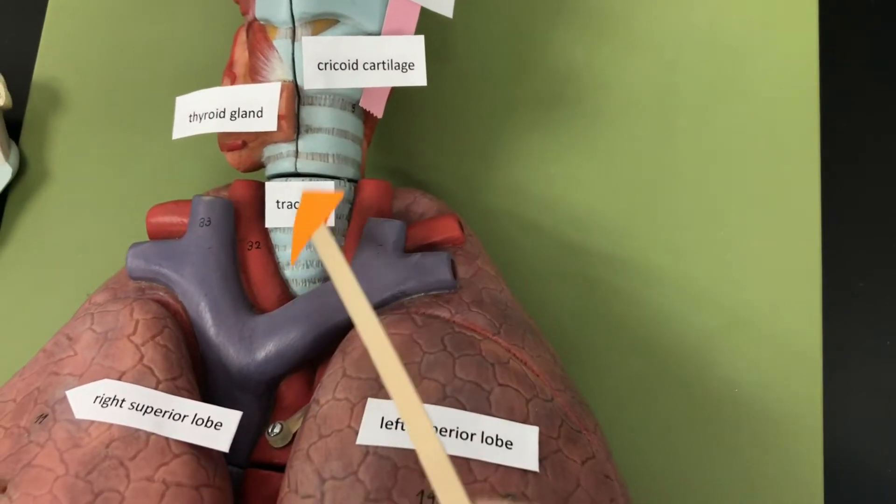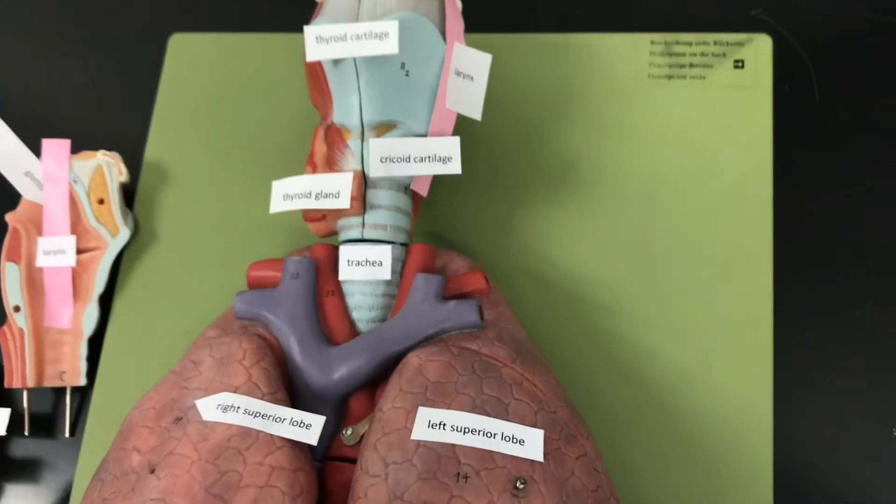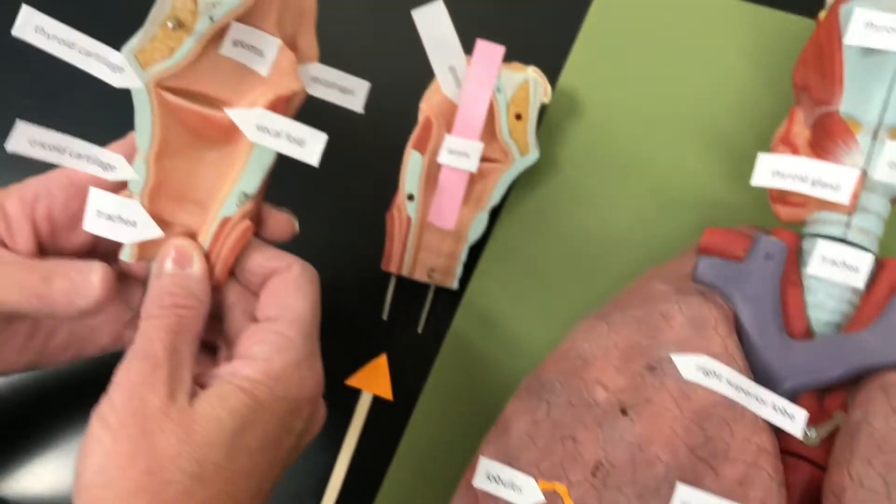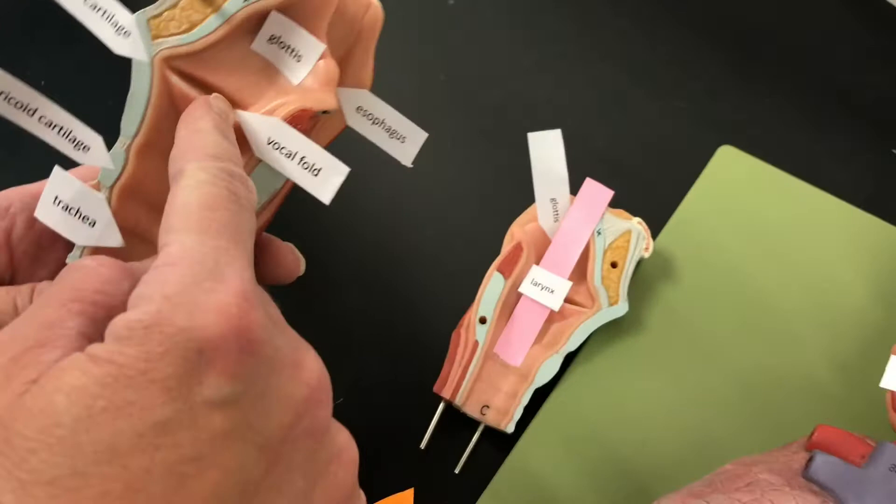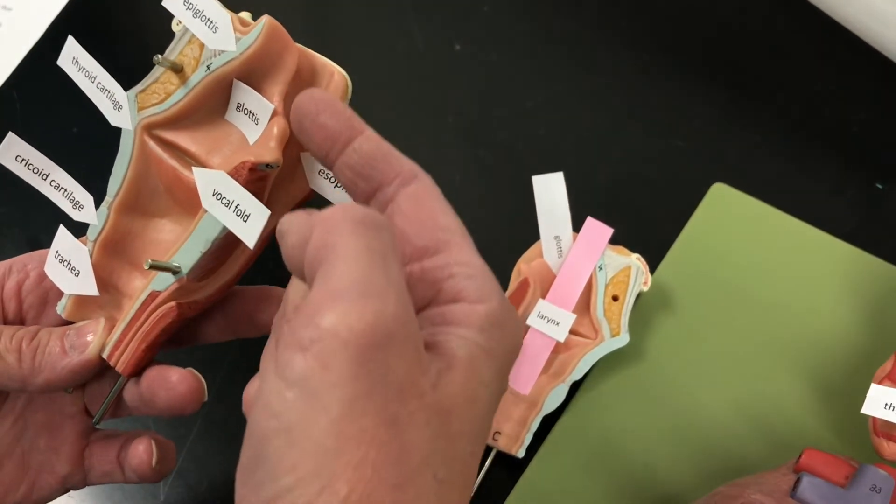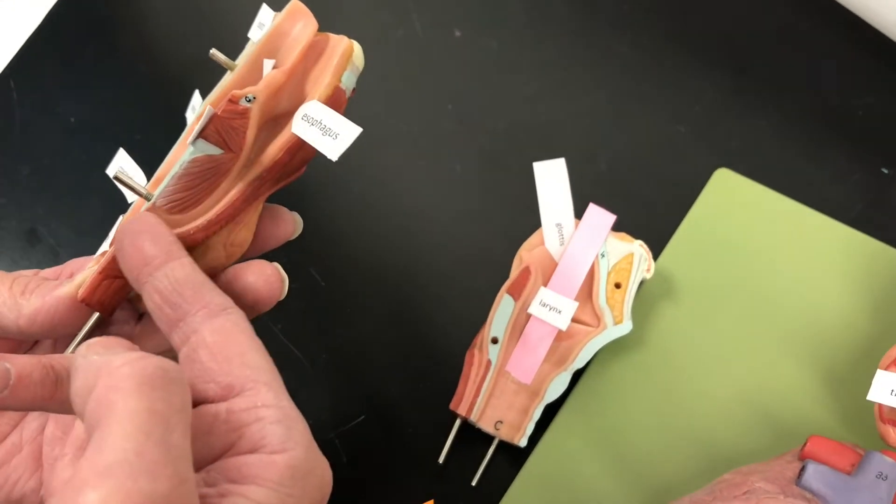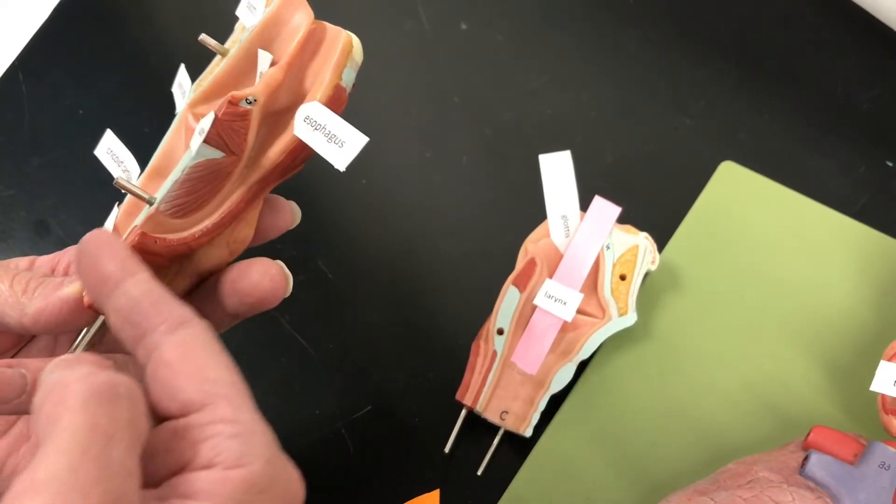Here we have the trachea. So if we open up the larynx region, we have the glottis. The glottis is going to be the hole where the air is going to go down. Here we have the esophagus. The esophagus is where food and drink go down to the stomach.